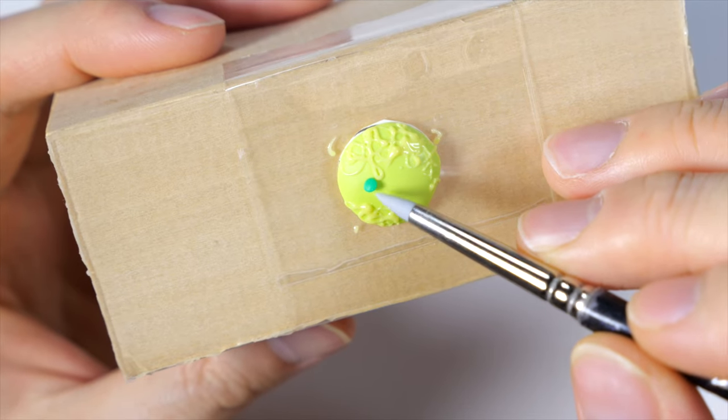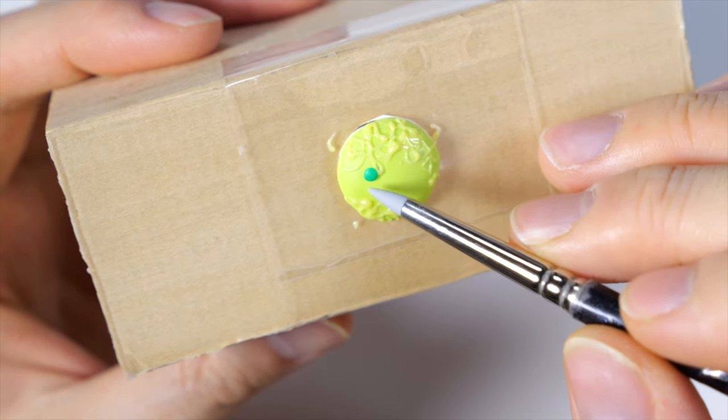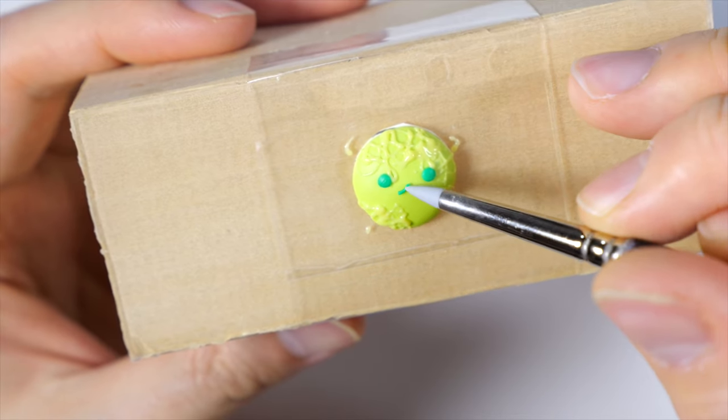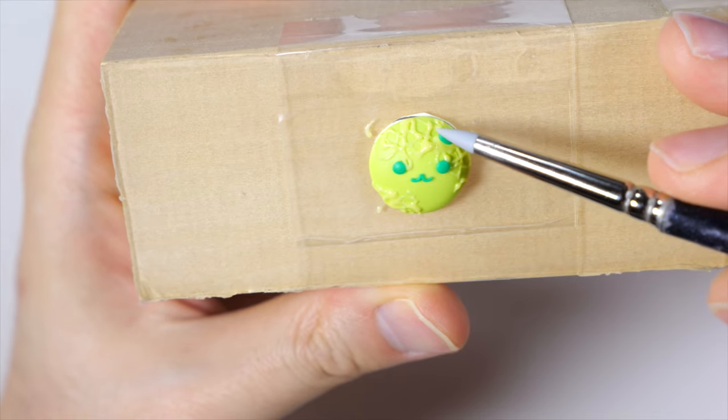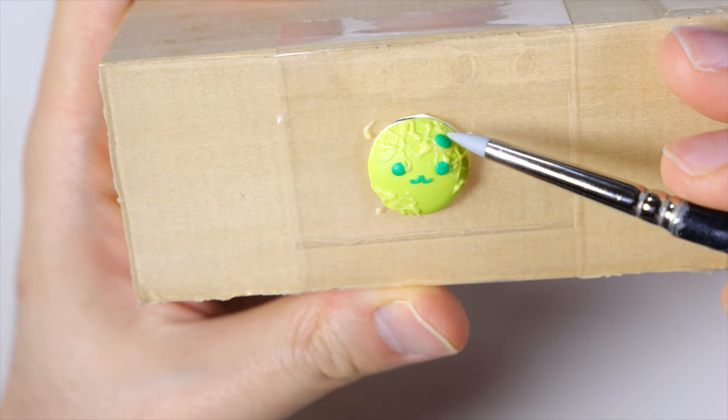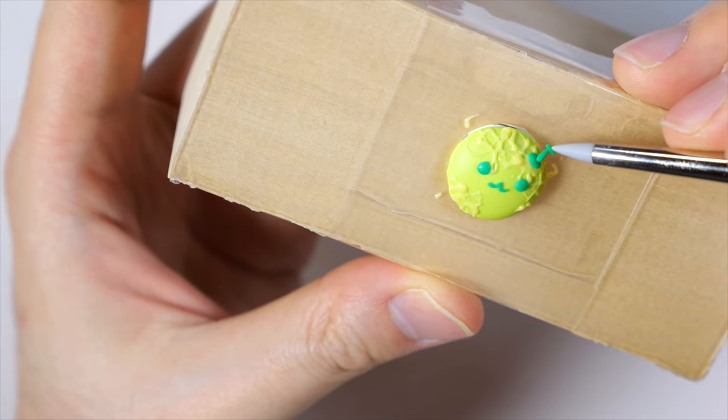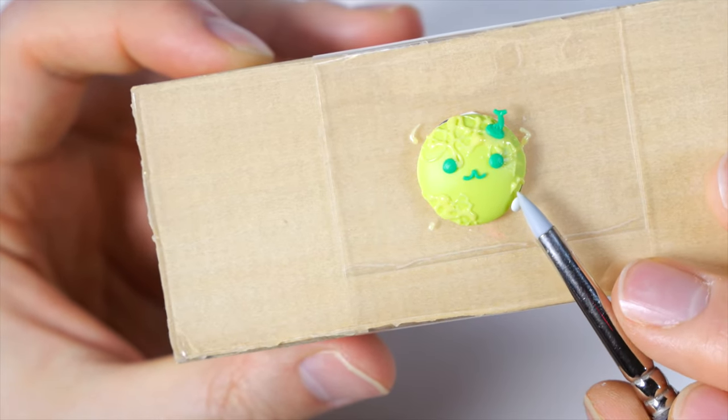And I added some dot eyes, a little W mouth. And for the stem thing, we're adding a green oval, a little snake, and another little snake on top. And a little white dot on the side for the glare.